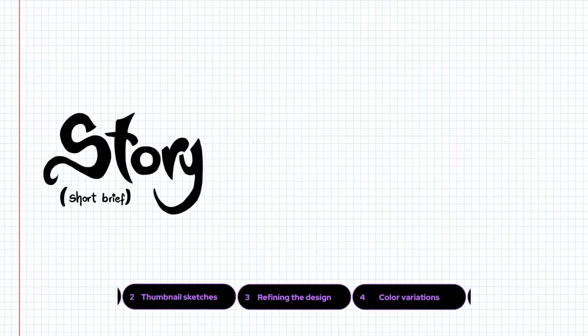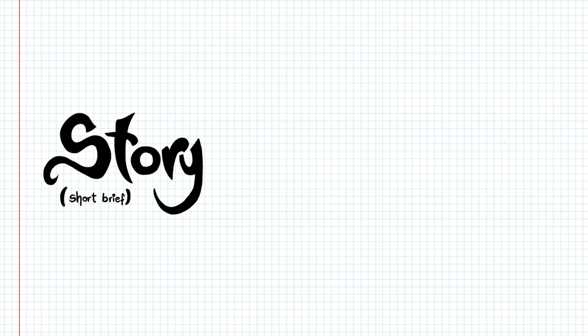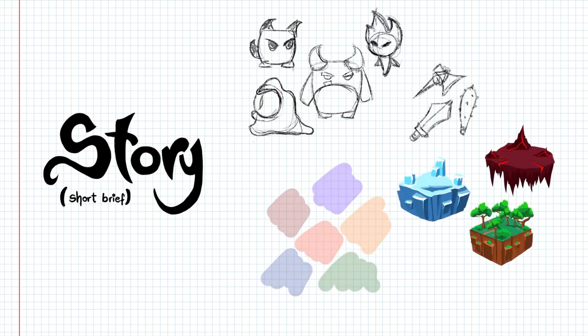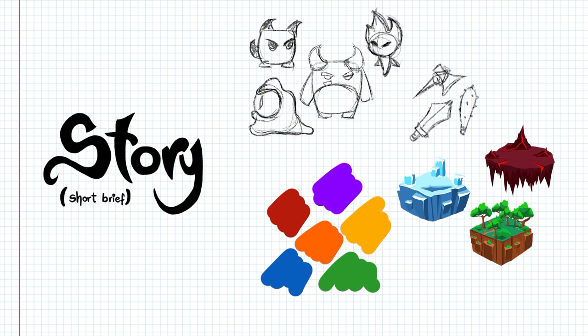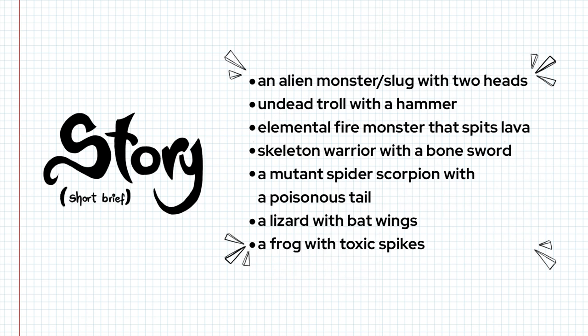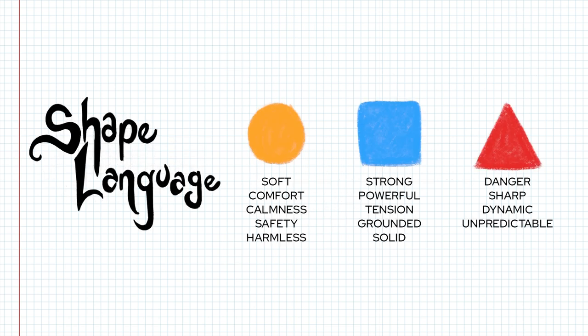Before even going into designing the character we need to think about some principles. The first one is the story — think about the character's appearance, backstory, abilities, habitat, colors, or any other traits you want to incorporate. The other principle is shape language, which plays a huge role in designing a character. There are three main shapes: circle, square, and triangle. Shapes tell us a story, show personality, and determine how your character will be perceived by the audience.